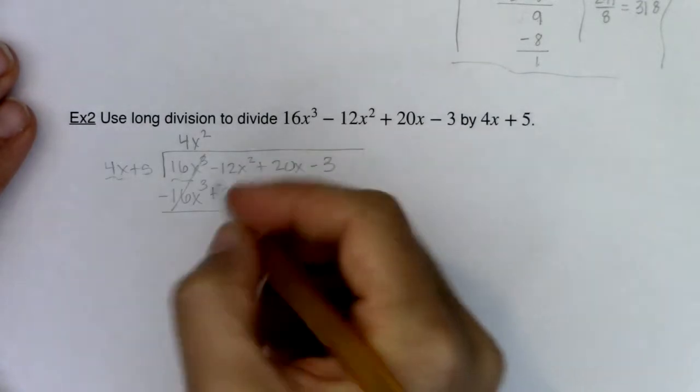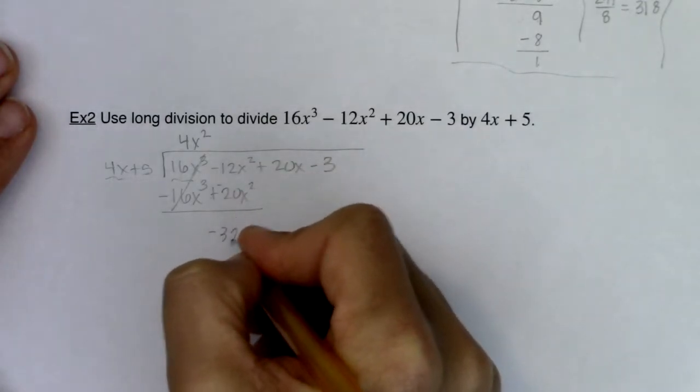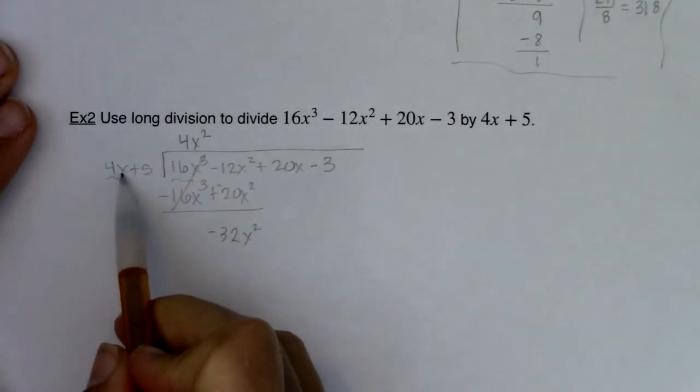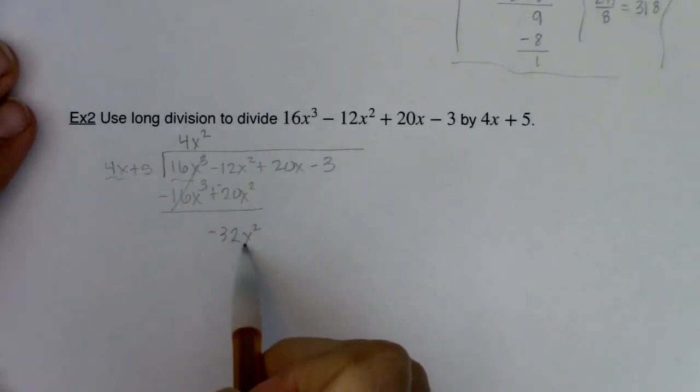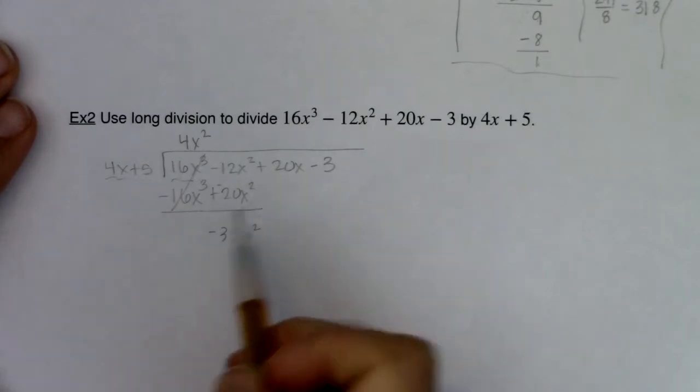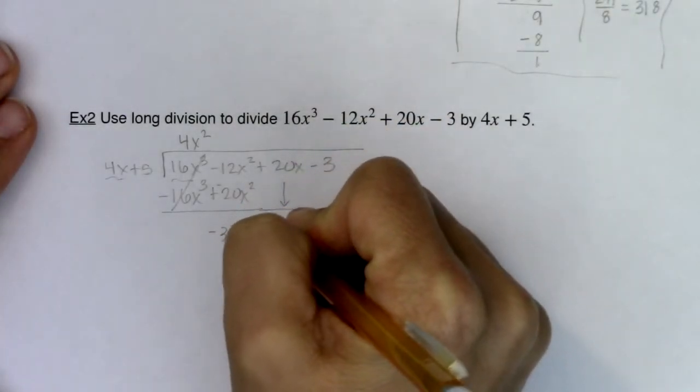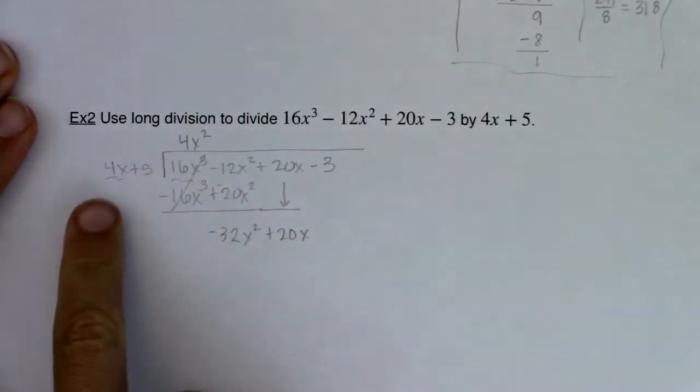We've got negative 12x squared minus another 20x squared. I'm looking at negative 32x squared. If I look at the degree here, this is degree 1, this is degree 2. Since this one's larger, I'm going to keep on going. So I'm going to bring down the 20x and we're going to go lead term to lead term.